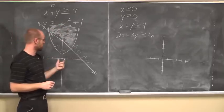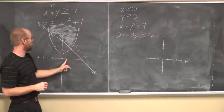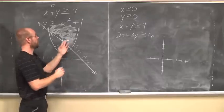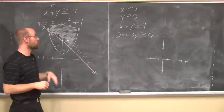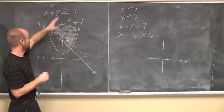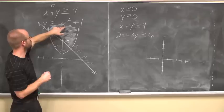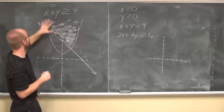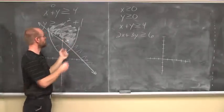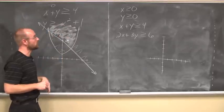Now let's consider where these values overlap. I have to be inside the parabola but above this line — that would be this area in here. The line extends out, so it has to be above the line and inside the parabola. To verify, let's choose the point (1, 4): 1 plus 4 is 5, which is greater than 4 — true. And 1 squared plus 1 is 2, and 4 is greater than 2 — also true. So this confirms this is the correct shaded area.